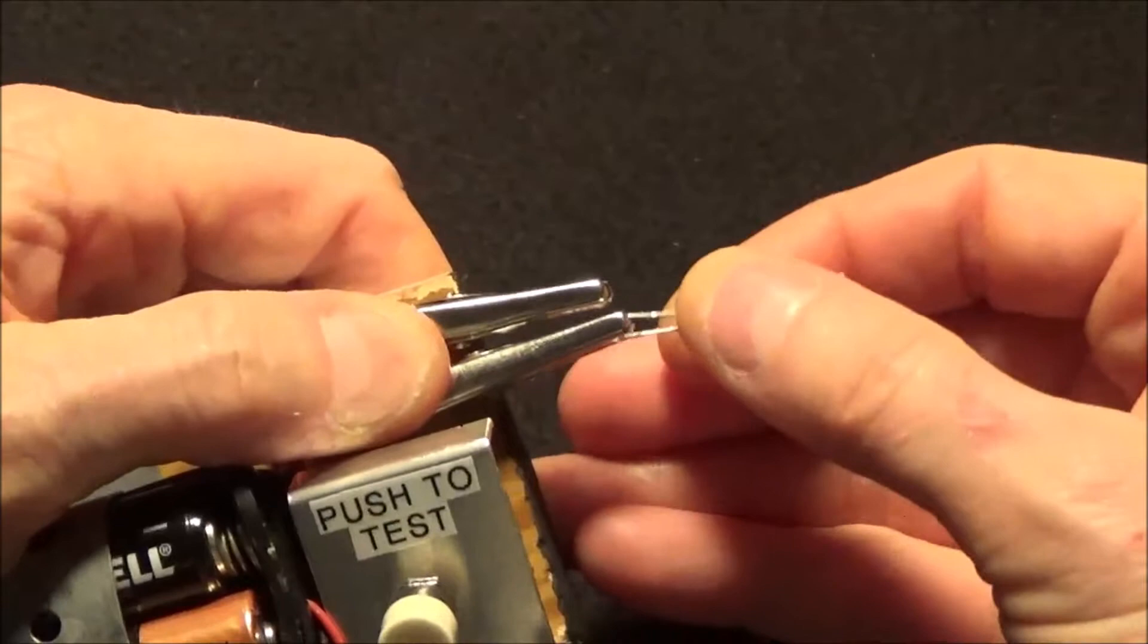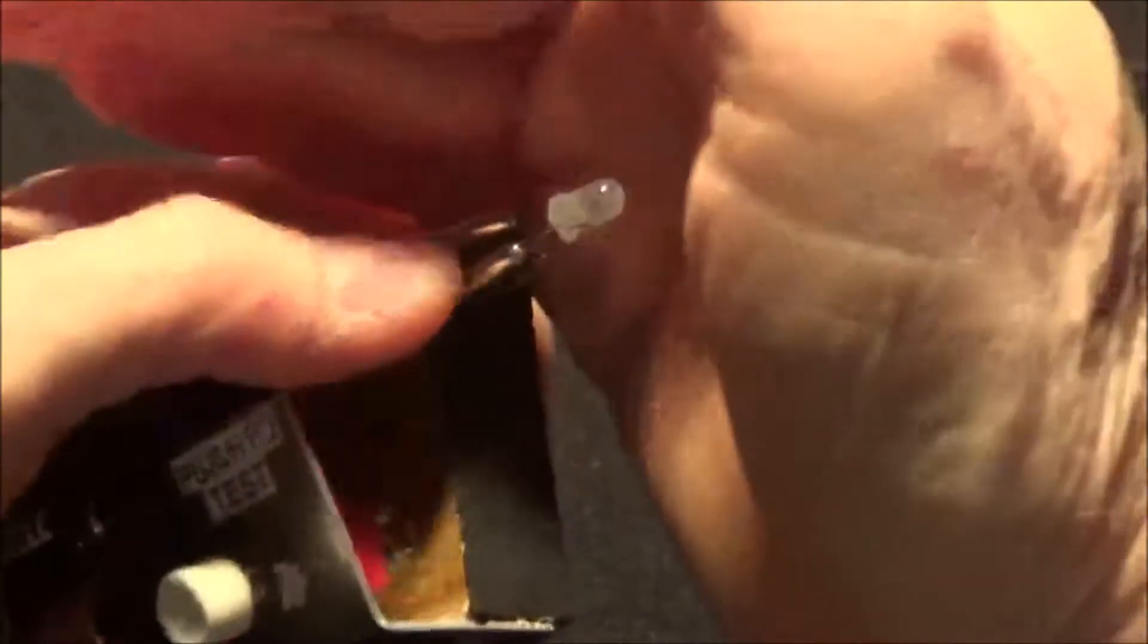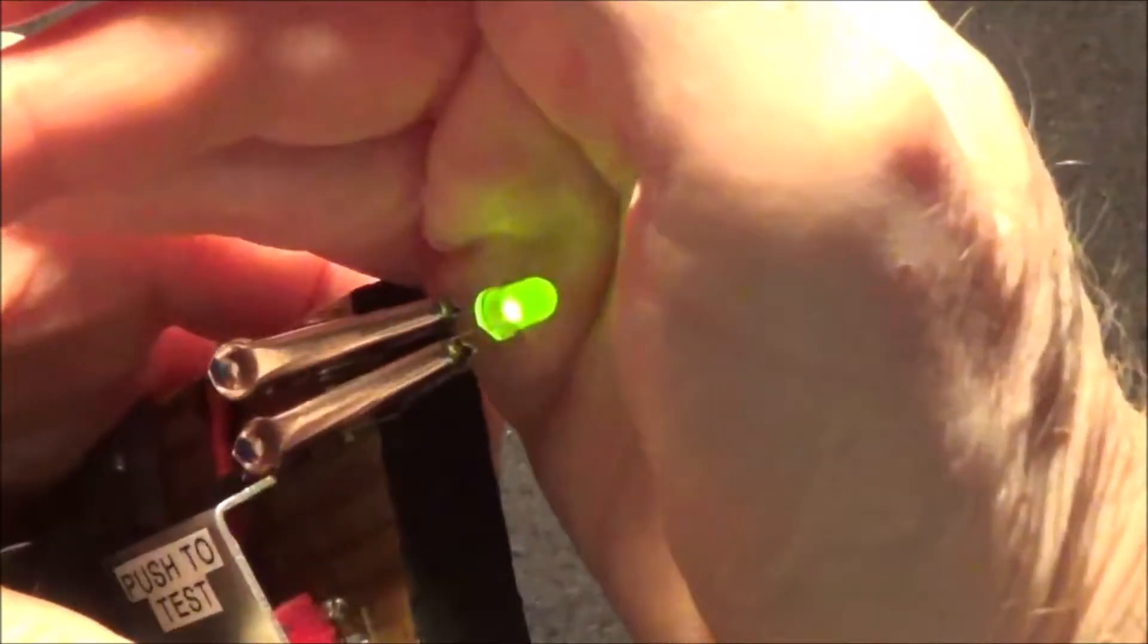And also if you have a bi-color LED like this one is, you can use it to see which side you have to power up to give you which color.